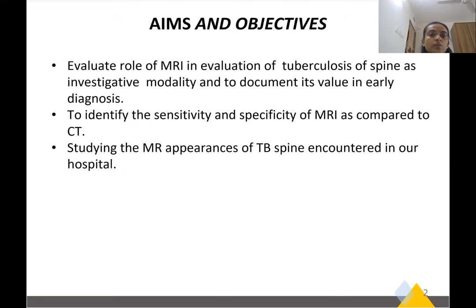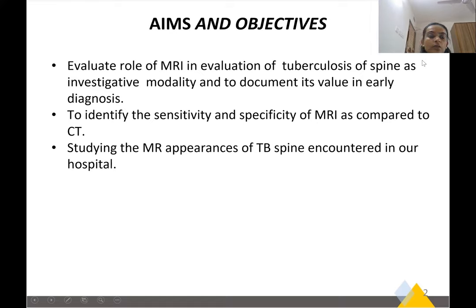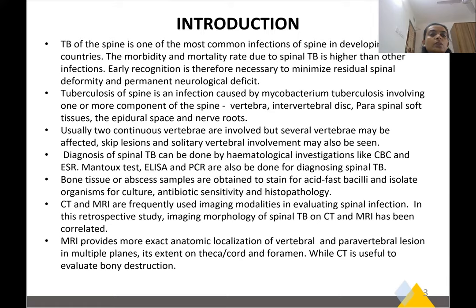Aims and objectives: the role of MRI in evaluation of tuberculosis of the spine as an investigative modality and its documented value in early diagnosis. To identify sensitivity and specificity of MRI compared to CT, and to characterize the MRI appearance of TB spine encountered in our hospital.